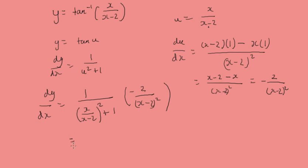And now, we need to tidy all this up. We'll get x minus 2 squared over x squared plus x minus 2 squared times our minus 2 over x minus 2 squared,